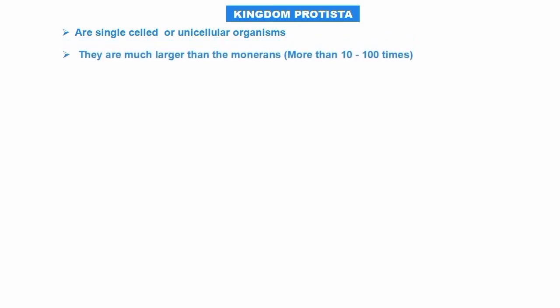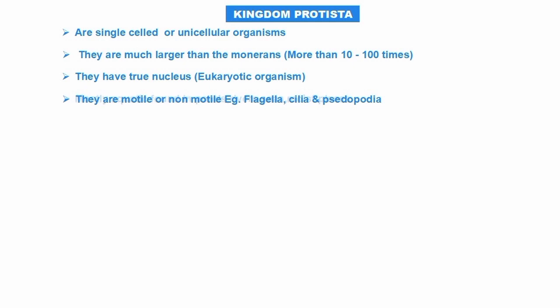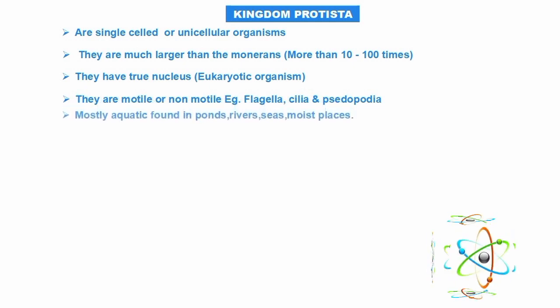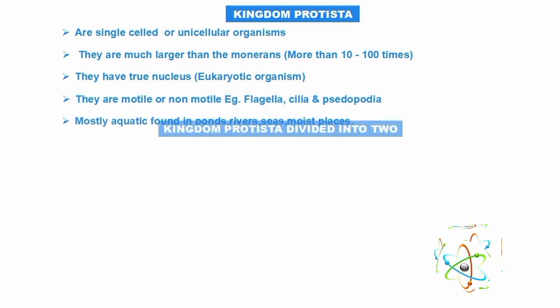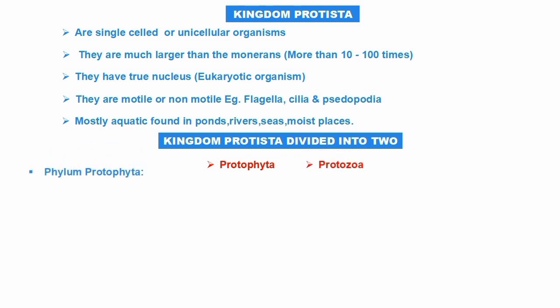Kingdom Protista are single-celled or unicellular organisms. They are much larger than Monera — 10 to 100 times larger. They have a true nucleus, which means they are eukaryotic organisms. They may be either motile or non-motile, using flagella, cilia, and so on. Most are aquatic, found in ponds, rivers, seas, and moist places. Kingdom Protista is divided into two phyla: Protophyta and Protozoa.